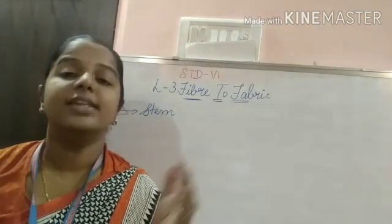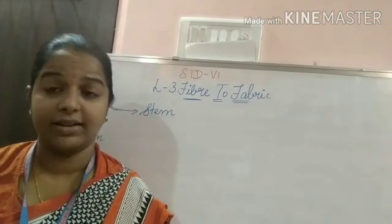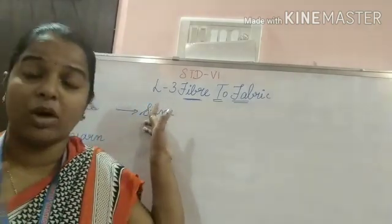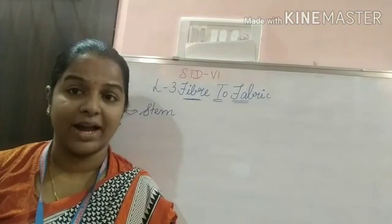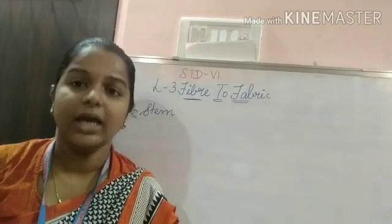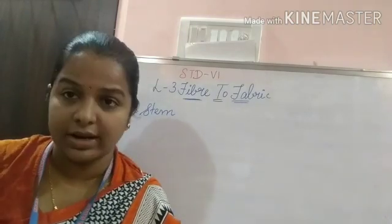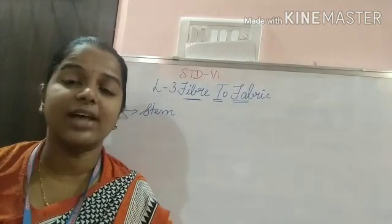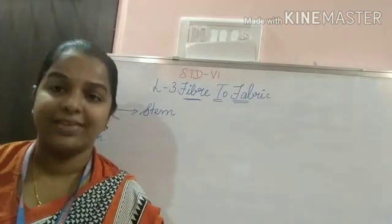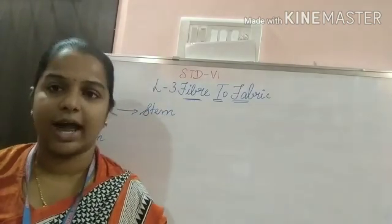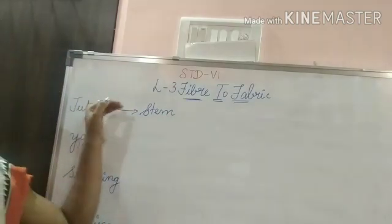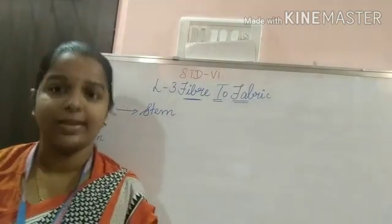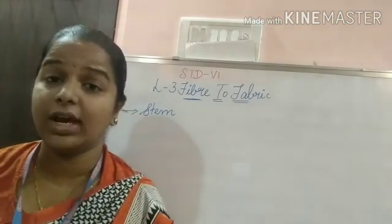How is jute removed from the plant? When the stem is rotten — that is, when it decays — these fibers are removed from the stem with the hands. In this way, the jute is obtained.